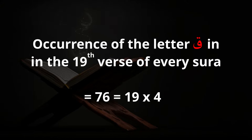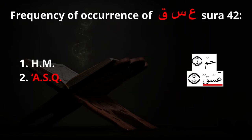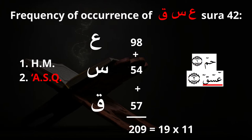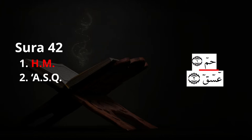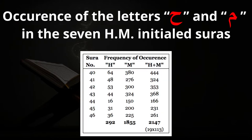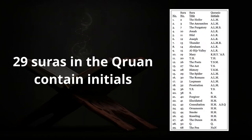What's also fascinating is that Surah 42 actually has two sets of initials. The first set occurs in Surah 42 a total of 209 times — 19 times 11. It also has the second set of initials Ha-Meem. Ha-Meem occurs in Surahs 40 through 46, and if you add all the Ha's and all the Meem's in these 7 surahs, the total is 2,147 — which is 19 times 113. There are 29 chapters in the Quran that have these Quranic initials, and consistently these initials occur in their respective chapters in multiples of 19.